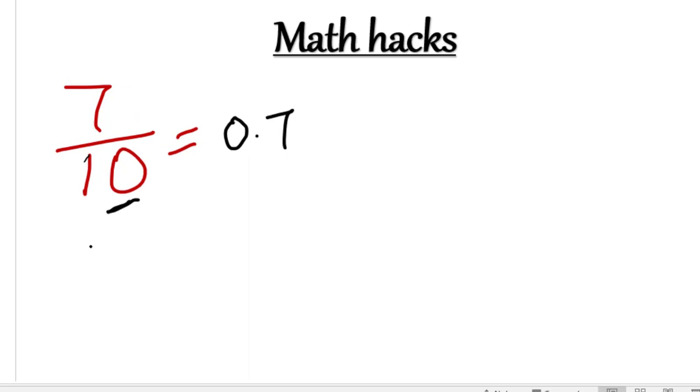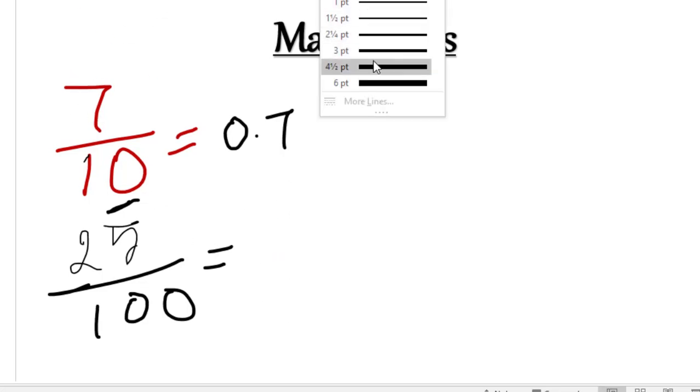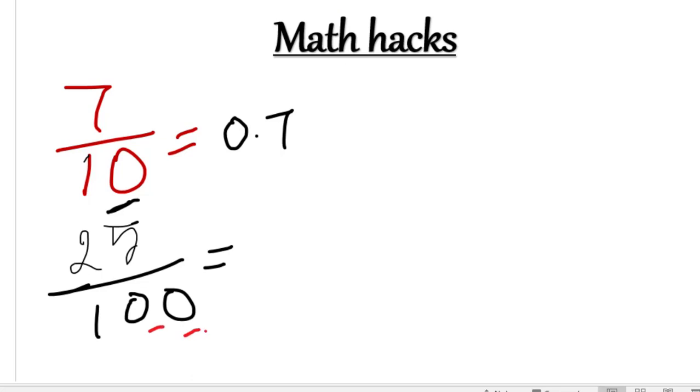Very easy, right? We can think of another example. For example, the number 25 divided by 100. How do we think about this? I hope you can guess. There are two zeros here, so we move the decimal two places, giving us 0.25.